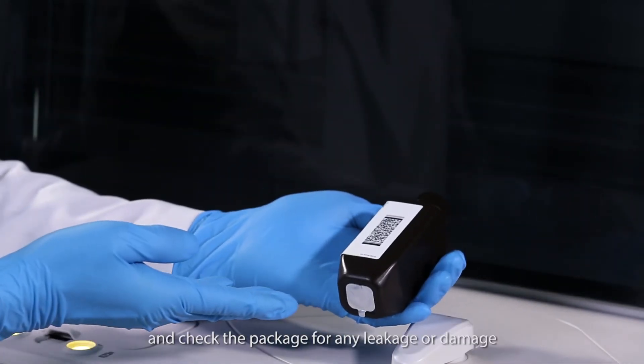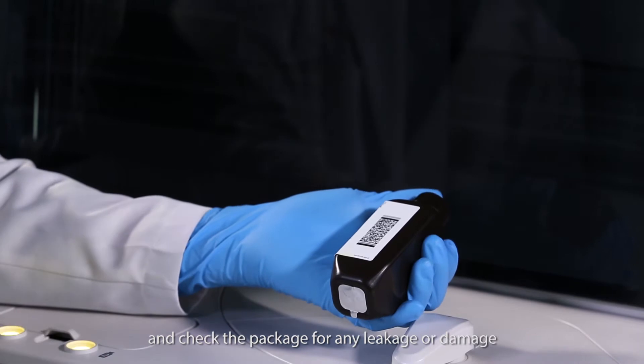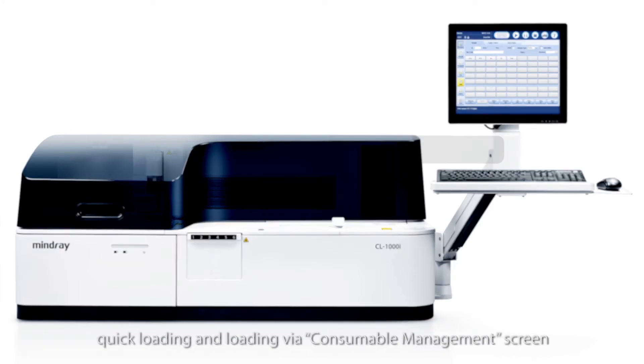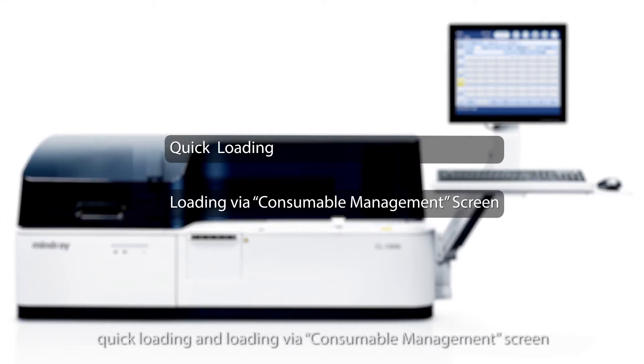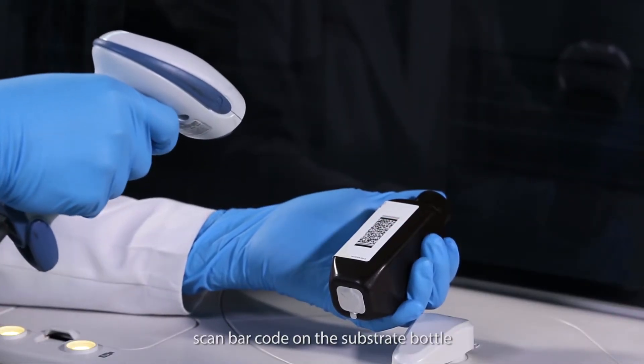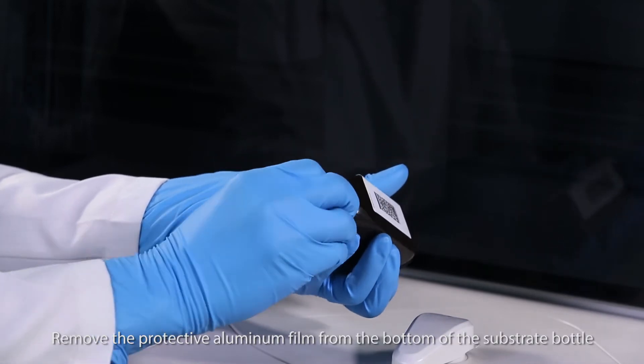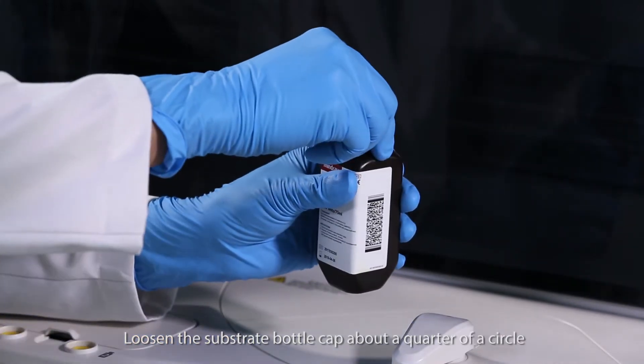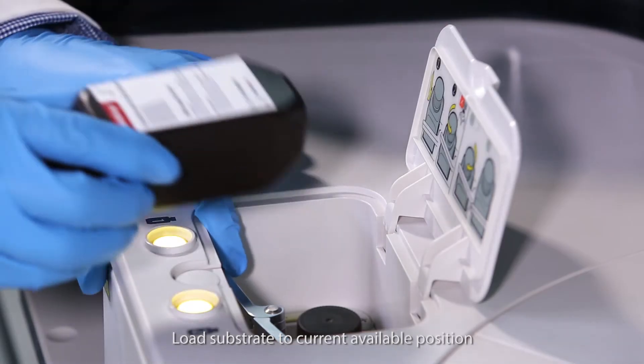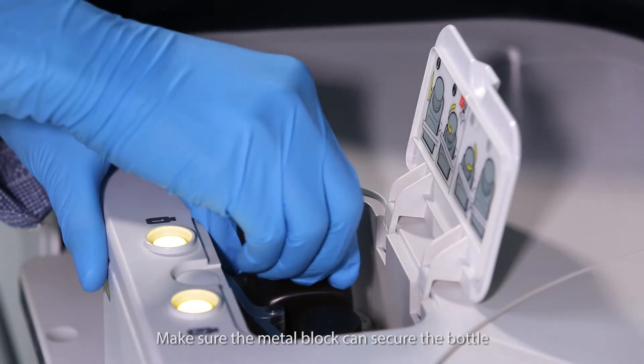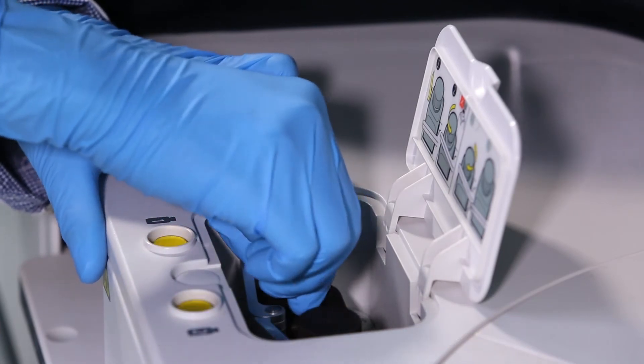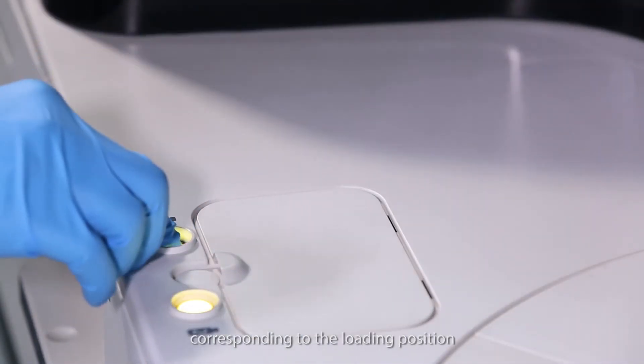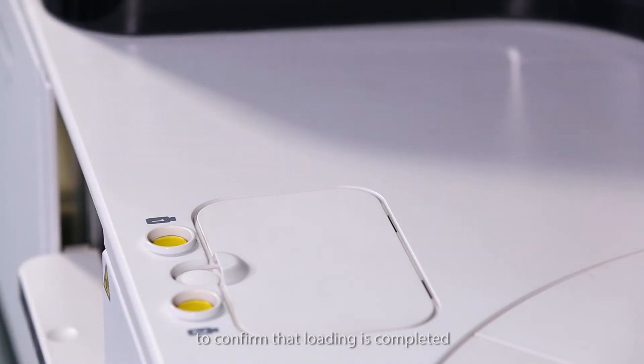Take one bottle of substrate and check the package for any leakage or damage. Equilibriate in room temperature for more than 6 hours. There are two ways to load the substrate: quick loading and loading via consumable management screen. For quick loading, scan barcode on the substrate bottle. Remove the protective aluminum film from the bottom of the substrate bottle. Loosen the substrate bottle cap about a quarter of a circle. Load substrate to current available position. Make sure the metal block can secure the bottle. Loosen the cap for a circle, but do not remove it. Press the indication light corresponding to the loading position to confirm that loading is completed.